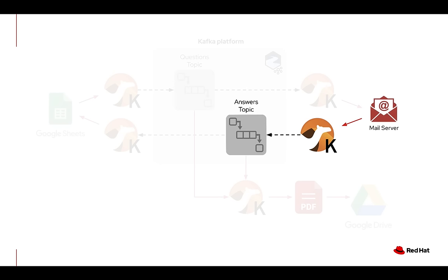Next, we want to build a third stage with CamelK that will implement the collection of all email responses from the different departments and stream those into a second Kafka topic called 'answers'. This building block does not require any implementation — it can also be a CamelBinding, therefore pure configuration.